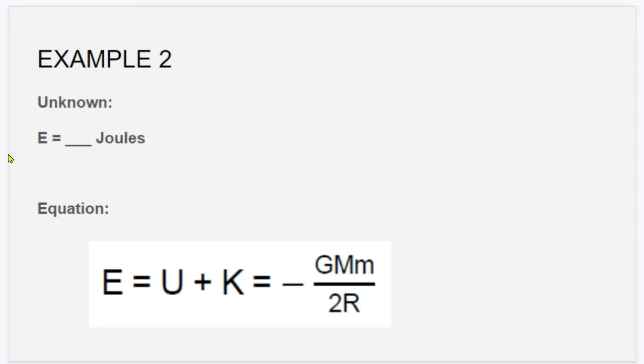So we have the potential energy based on the distance from the center of the earth to the center of the satellite, and we also have kinetic energy because the satellite is orbiting and it has mass and a velocity. So that leaves us with this formula. It is negative G times capital M times lowercase m divided by 2 times capital R.